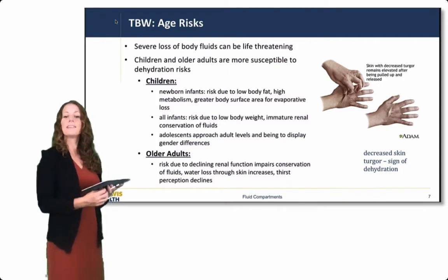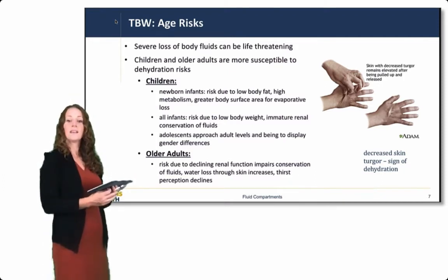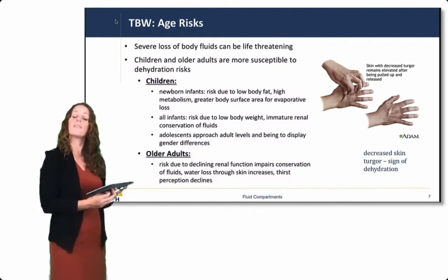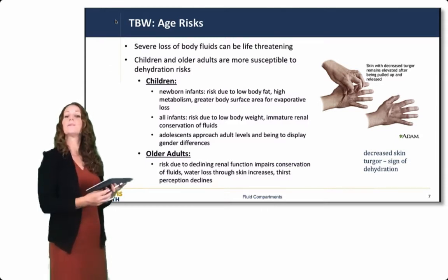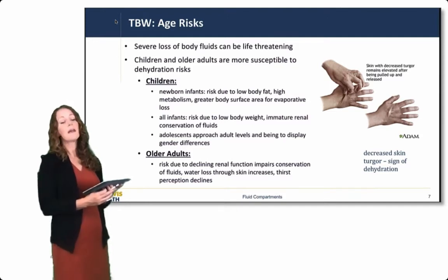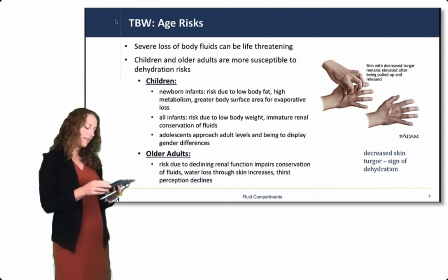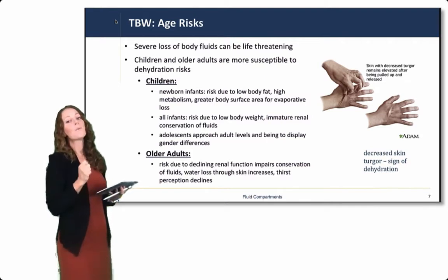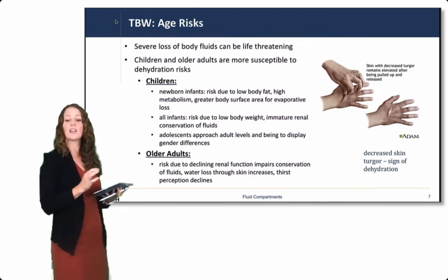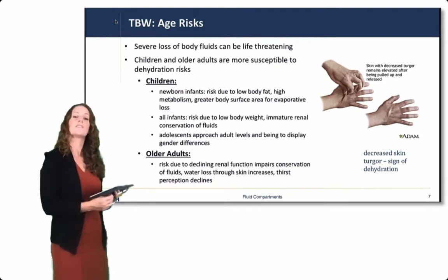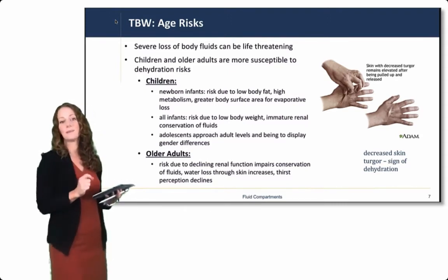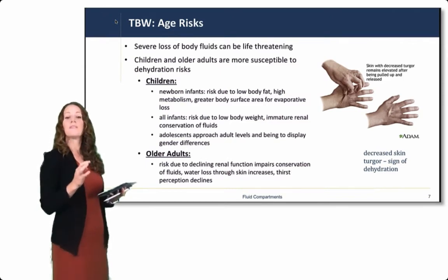As children get older, approaching adolescence and more adult ages, their levels begin to match adult levels and they begin to display the gender differences we saw in the previous slides. Older adults are also at risk due to declining renal function, impairing the conservation of fluids. Water loss through the skin increases, and thirst perception, as with other sensory perceptions, can decline with age. One of the main signs of dehydration or loss of fluid is decreased skin turgor — those physical signs and symptoms are clues for loss of body fluid.